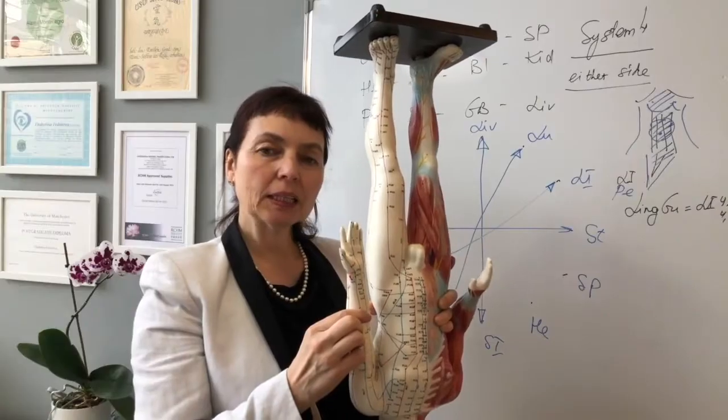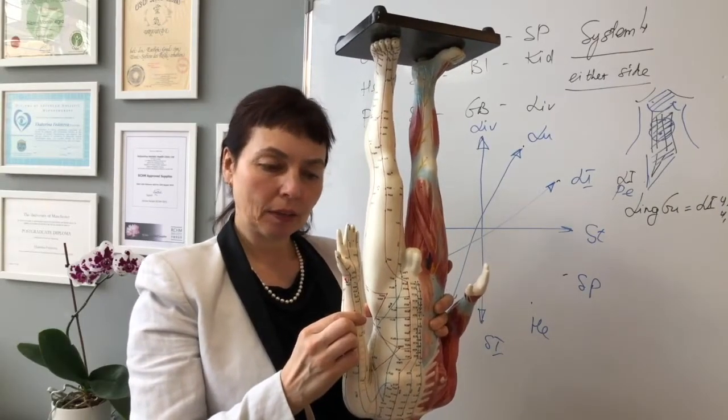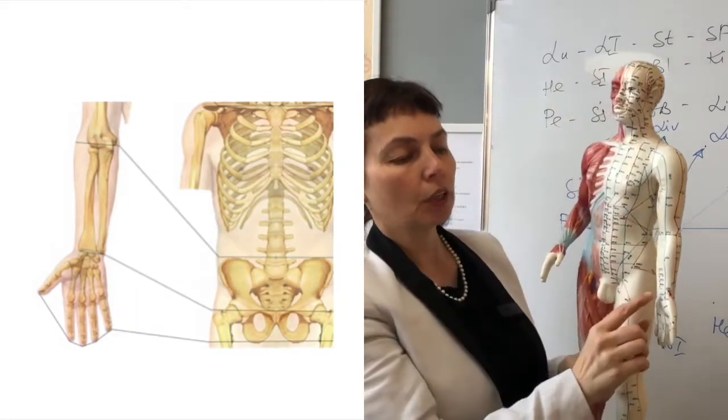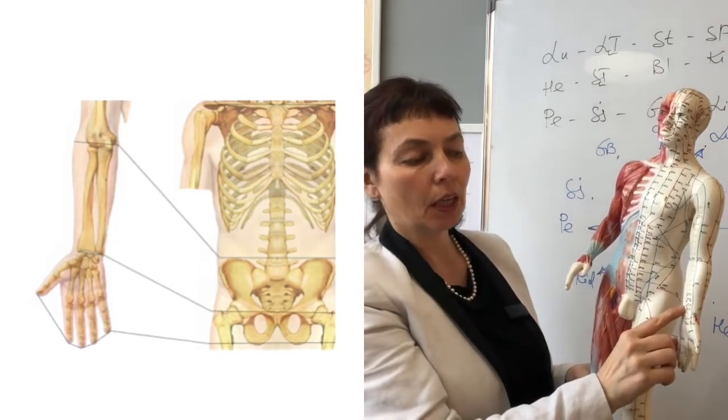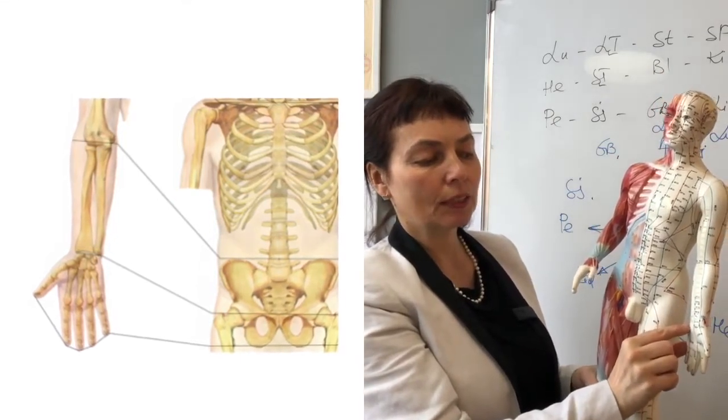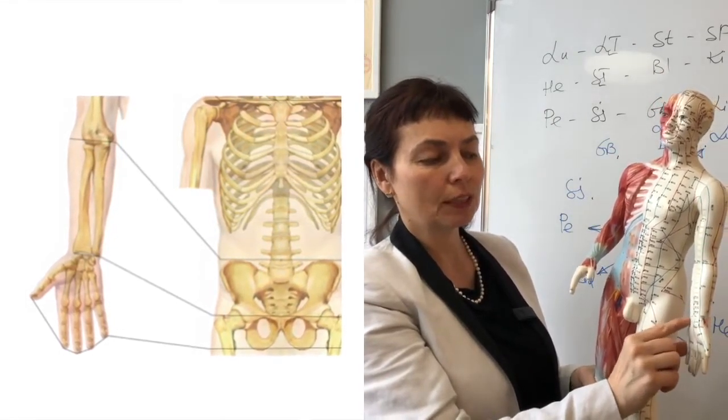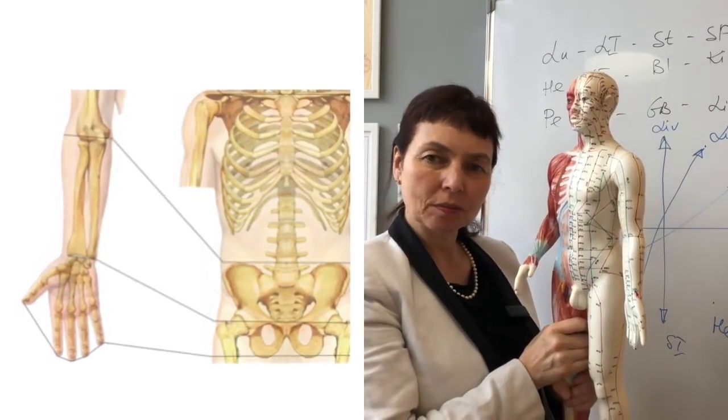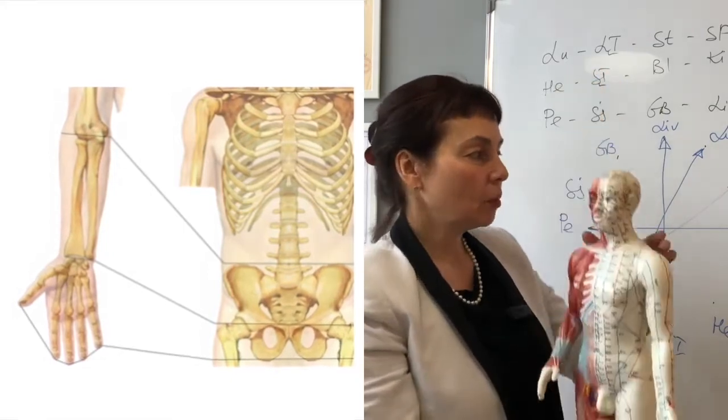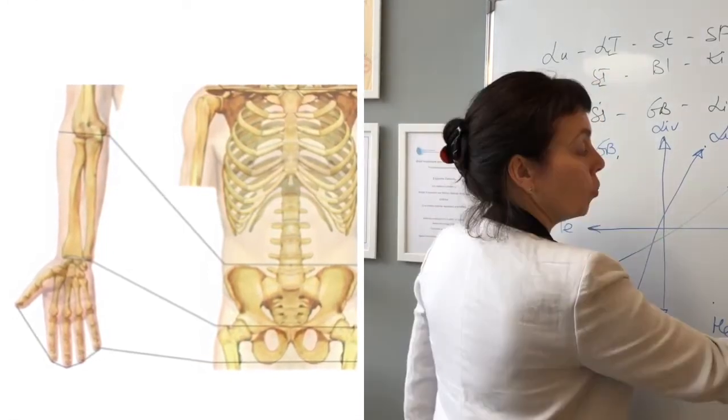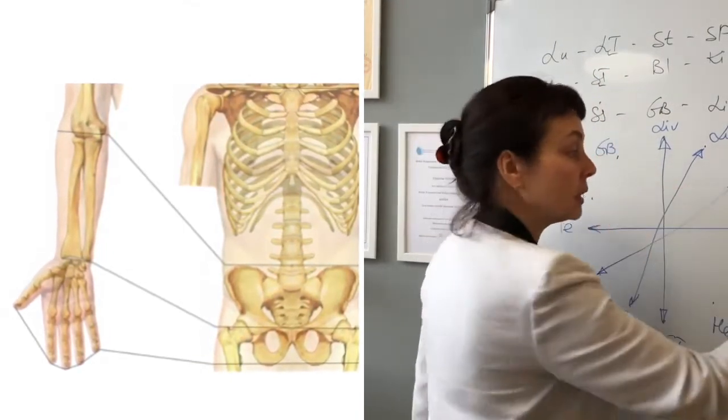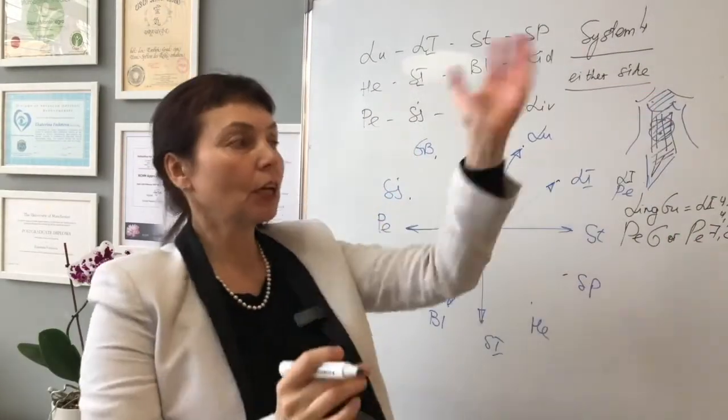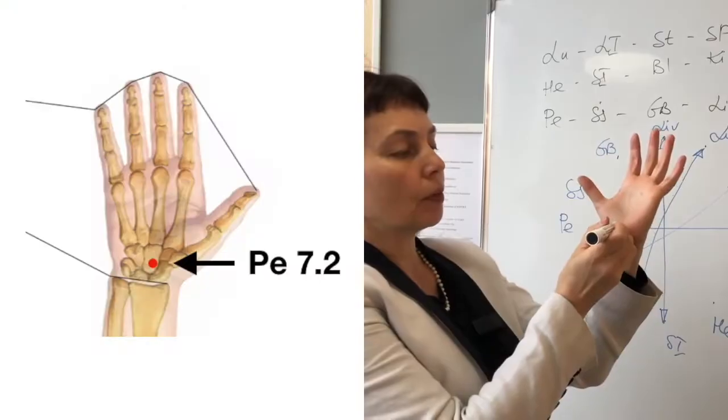If the pain is in the gynecological area, we'll use the direct projection and needle the points close to the wrist. What is the best point for gynecological disorders? It can be pericardium. The best point is pericardium 7.2, located somewhere here on the wrist.